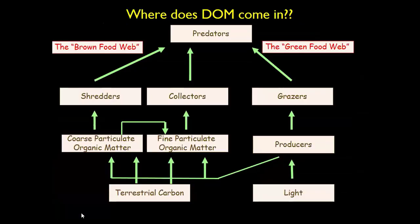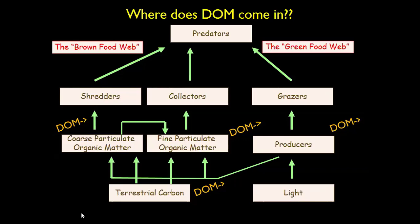So where does the dissolved organic matter come in? Where does it fit in this picture? It's everywhere. As all of the organic matter breaks down, it's leaching out into the water. In upper-level courses you learn those nice things from lower-level courses are generalities — not true all the time. The dissolved organic matter — it's carbon, it's coming out of everywhere. It's coming out of the green food web, out of the brown food web. It's leaching out of any of the organic matter that's breaking down.